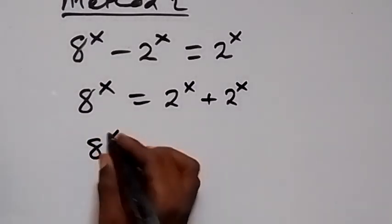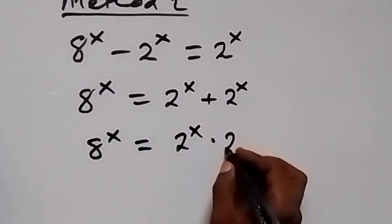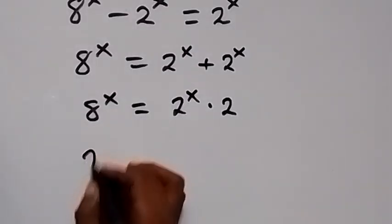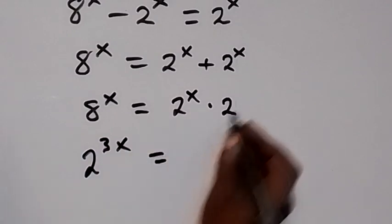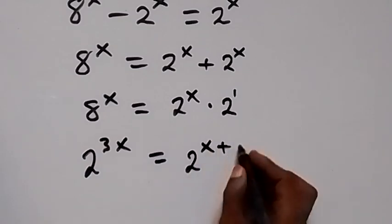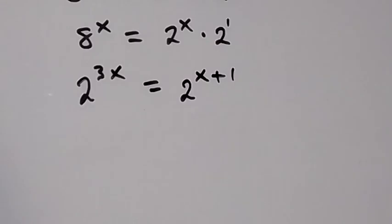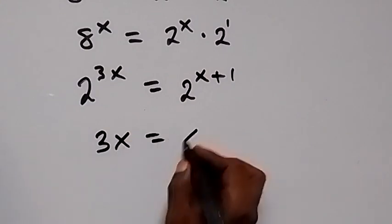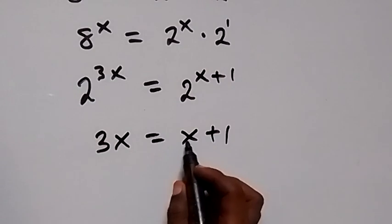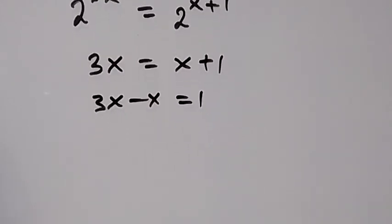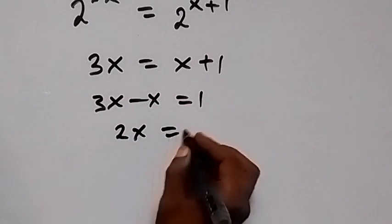We have two of them, so 8 raised to power x equals 2 raised to power x times 2. Changing 8 to base 2, we get 2 raised to power 3x equals 2 raised to power x plus 1, since multiplying same base means adding powers. Same base on both sides, so we equate the powers: 3x equals x plus 1.